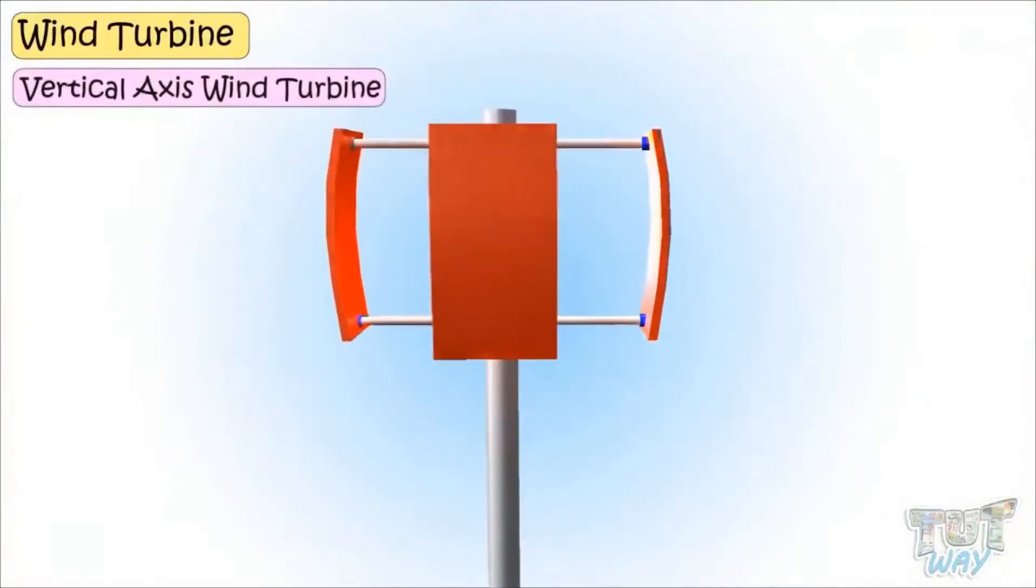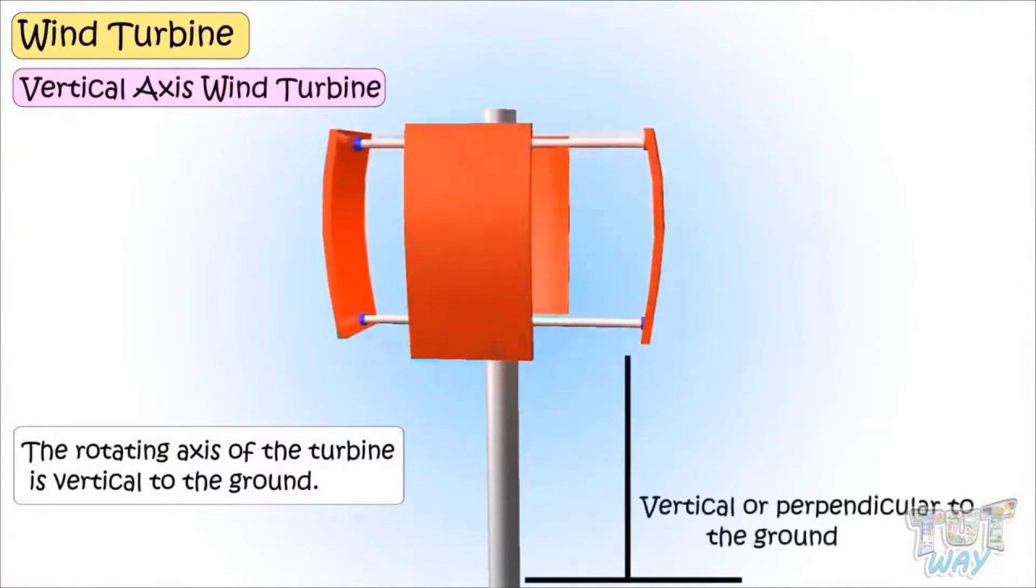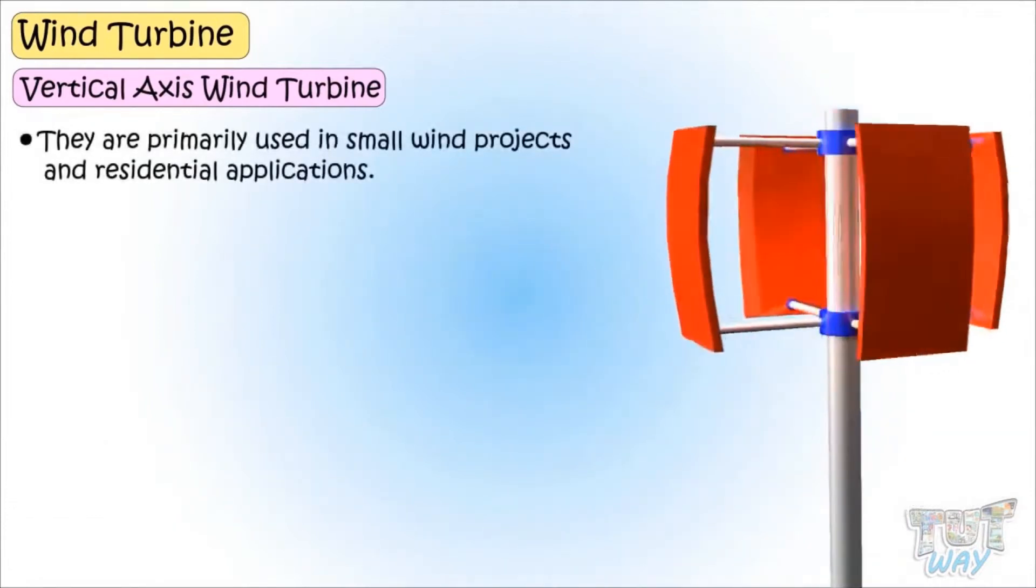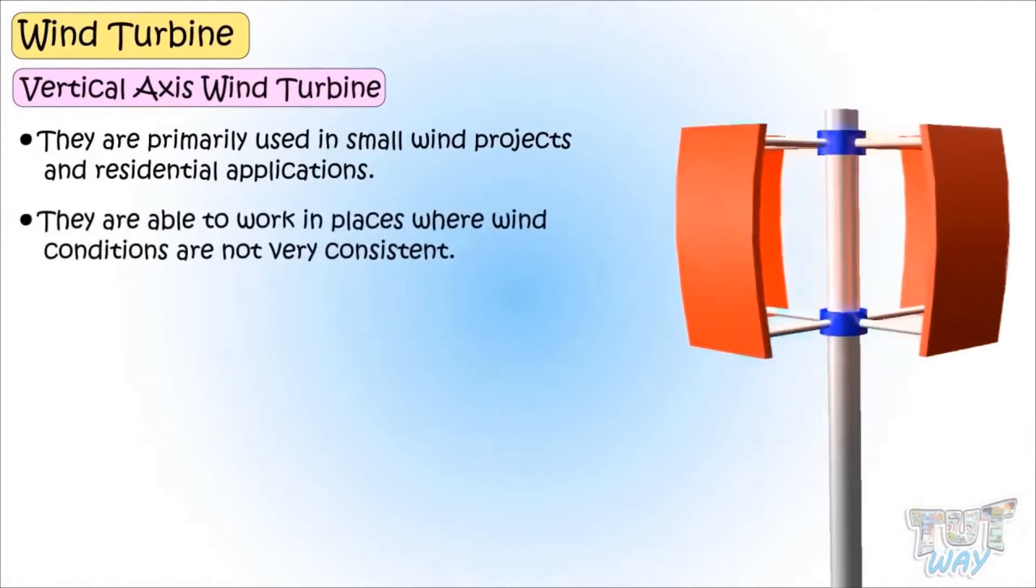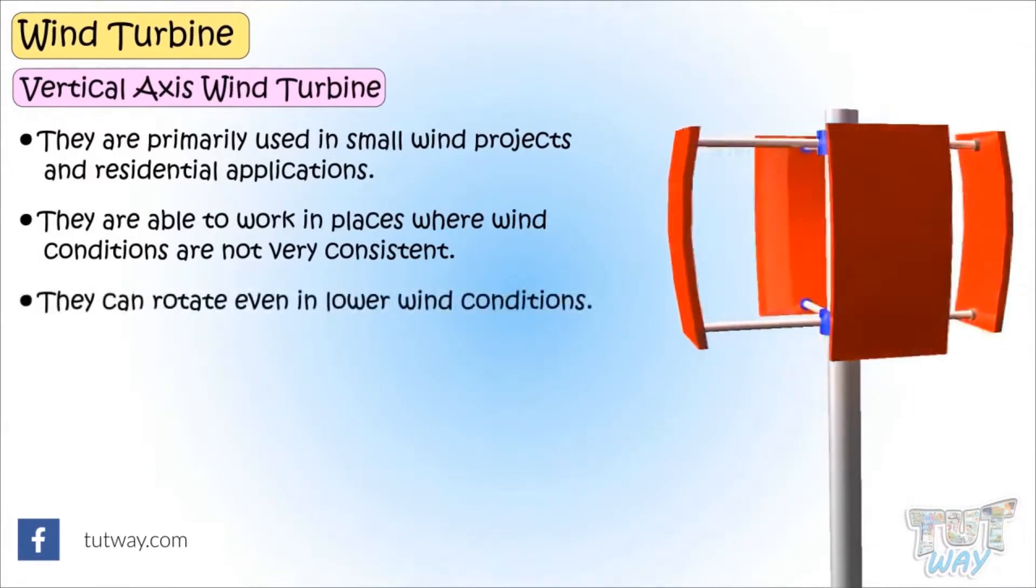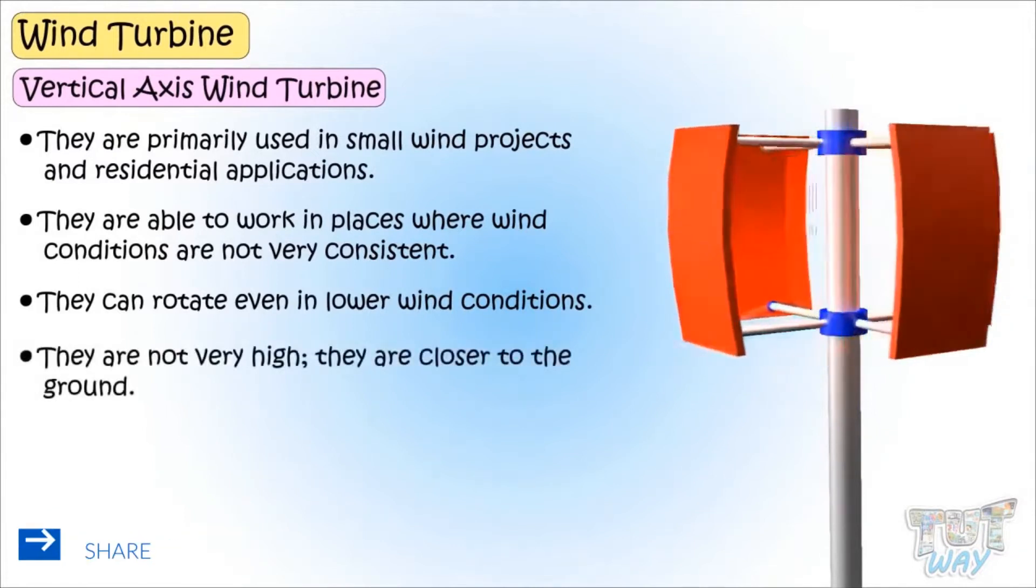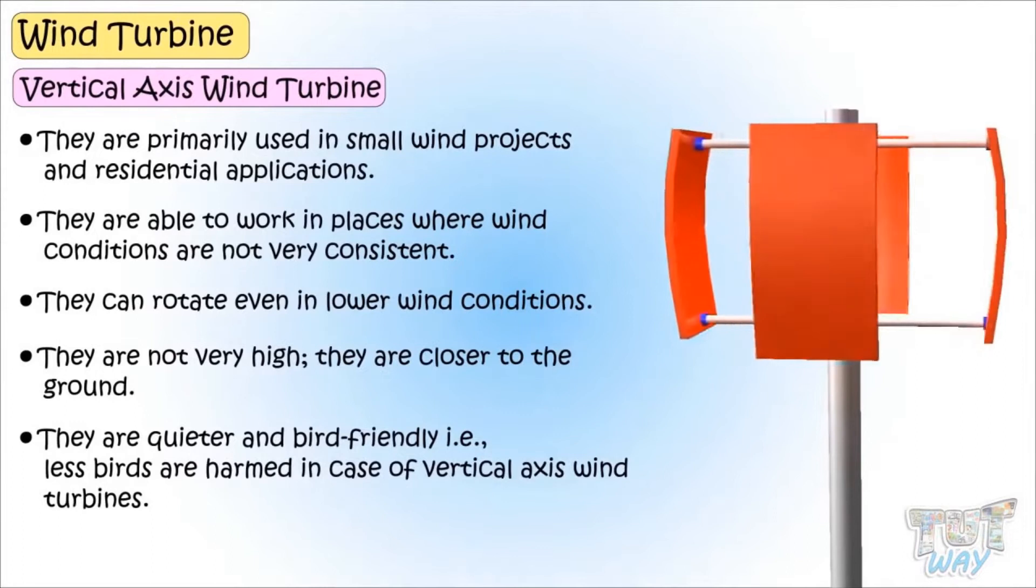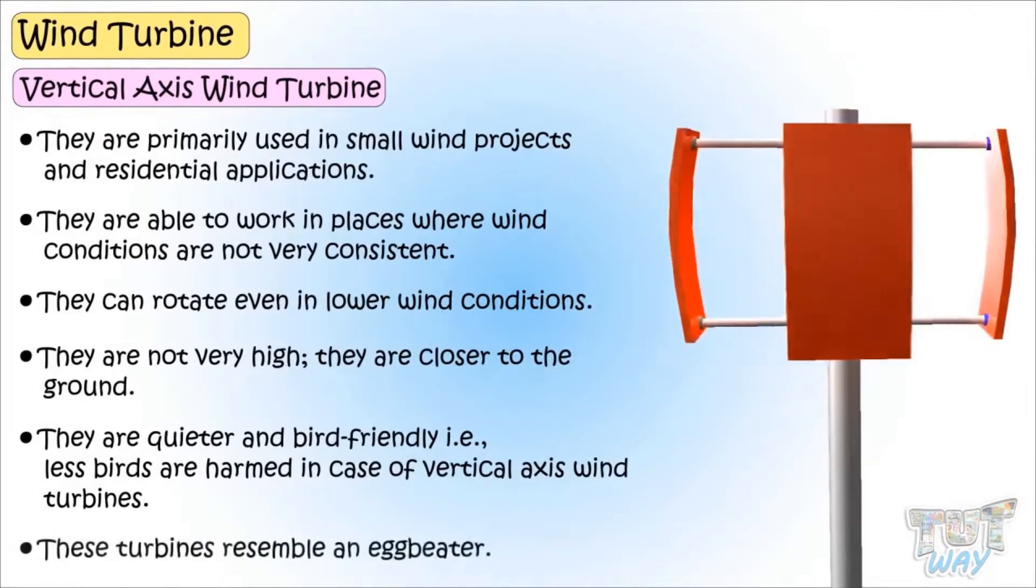Vertical axes wind turbines in case of vertical axes, the rotating axes of the turbine is vertical to the ground or perpendicular to the ground. They are primarily used in small wind projects and residential applications. They are able to work in places where wind conditions are not very consistent and they can rotate in even lower wind conditions. They are not very high. They are closer to the ground. They are quieter and more bird friendly. That is, lesser number of birds are harmed in case of vertical axes wind turbines and these resemble an egg beater.